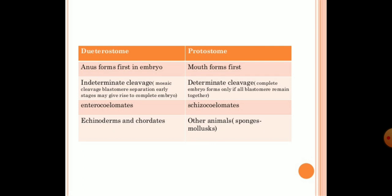Two important terminologies: deuterostome and protostome. In deuterostomes, the anus is formed first in the embryo — 'deutero' means end/later. In protostomes, the mouth forms first — 'proto' means starting. Cleavage refers to the division of the embryo from two-celled to four-celled to eight-celled stages. Examples of deuterostomes are echinodermates and chordates; protostomes include sponges and mollusks.